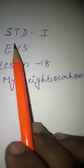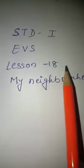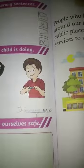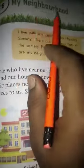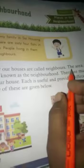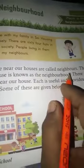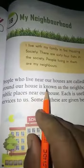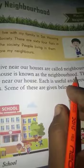Good morning students. Today I am going to teach you Standard One EVS Lesson 18: My Neighborhood. In this lesson we will learn about the neighborhood. People who live near our houses are called neighbors. The area around our house is known as neighborhood.